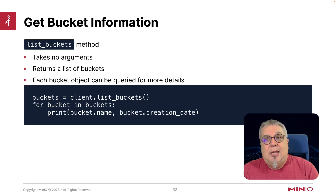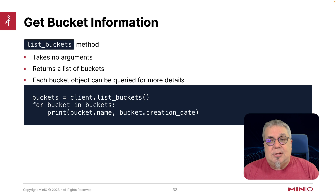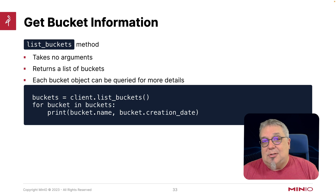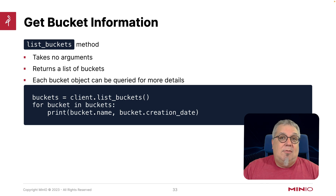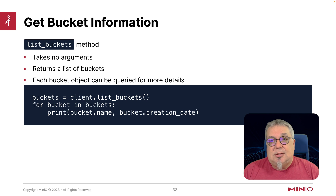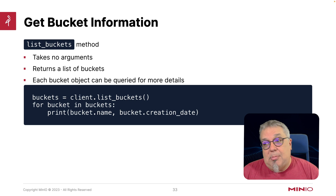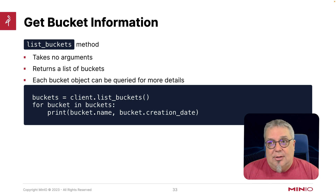Another piece of information you can get is list_buckets, which gives you all the different buckets you have. All you need to do is tell the client that you want to list buckets — it doesn't even require anything coming in from the event. Maybe at the beginning of your event you just want to do a list of all the buckets, or see any buckets that may have been changed, or sort by creation date. There are lots of different ways you can handle this.